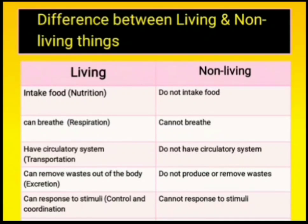Second, living things breathe — they perform respiration — whereas non-living things cannot breathe. Living things have a proper transportation or circulatory system which helps them transport various food materials. However, non-living things do not have any transportation system. Living things can also remove or produce waste in the body, whereas non-living things do not remove or produce any waste.